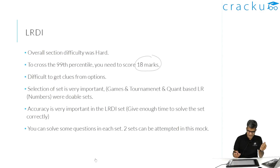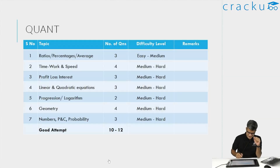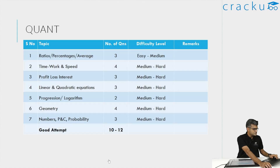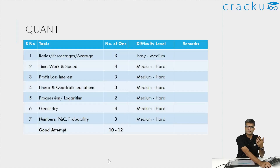Now let us look at the quant section. The quant section was definitely on the more difficult side. This was a section where we tried to mimic something which came in CAT 2023, where the questions were all pretty difficult, but there were also some easy sitter questions among the 22 questions. Going topic-wise — ratio and proportion had three questions. One question was a complete sitter and the other two also were not very difficult, though unfortunately not many people got them correct without exam pressure. All three ratio and proportion questions should have been answered by a good student.